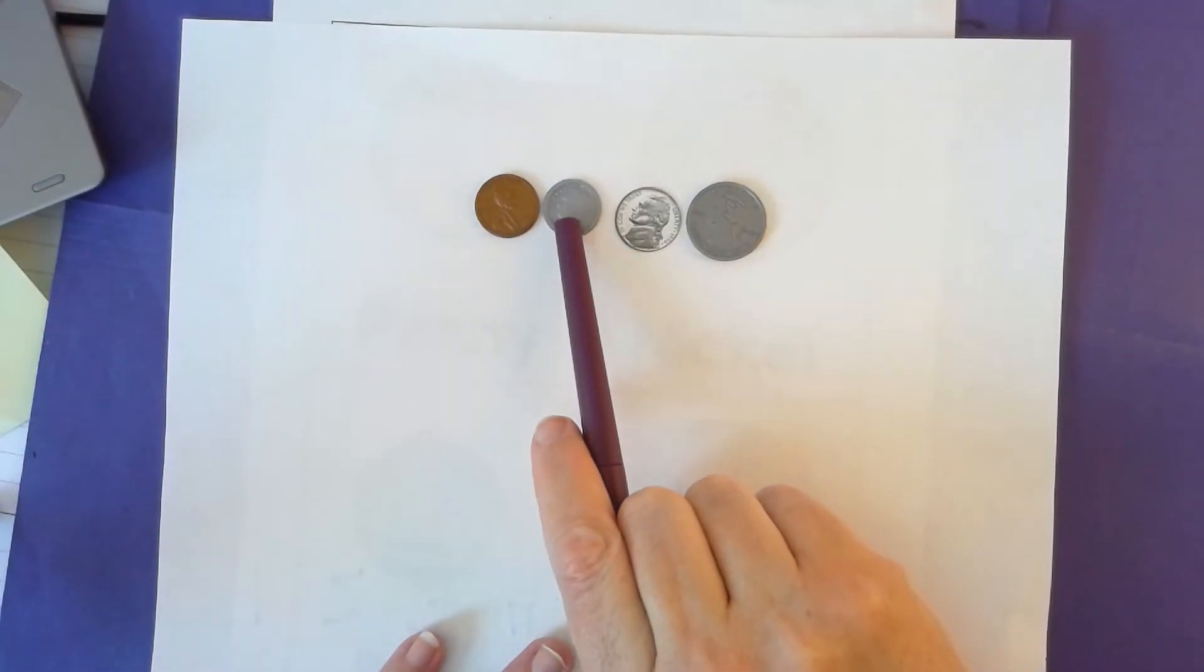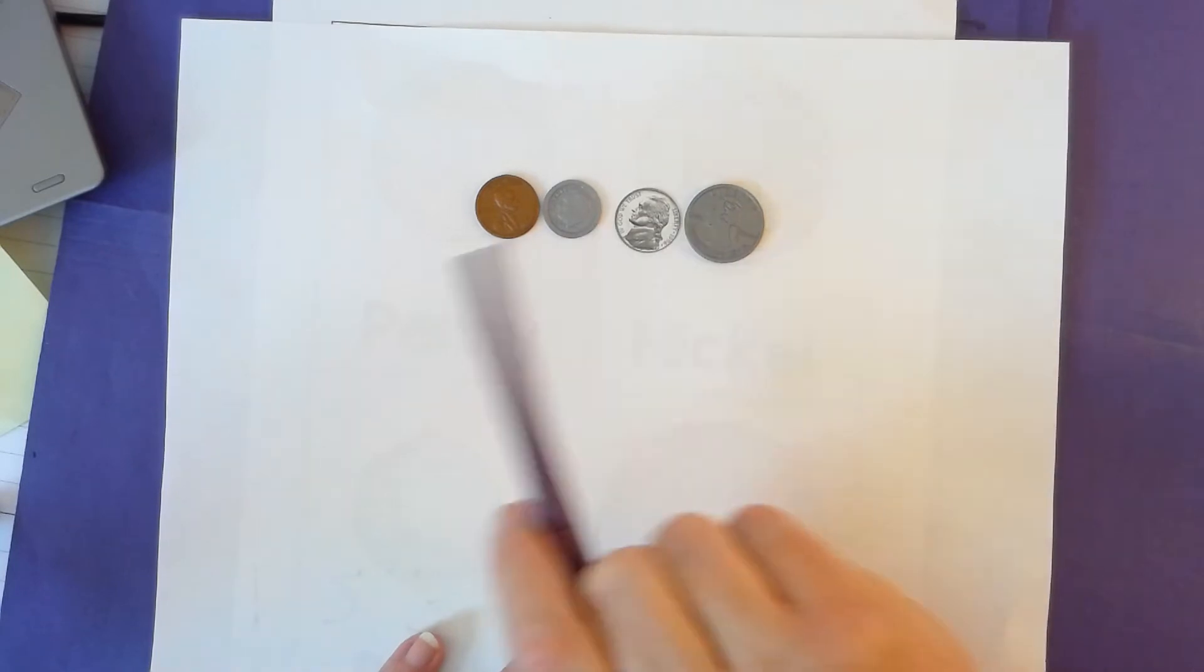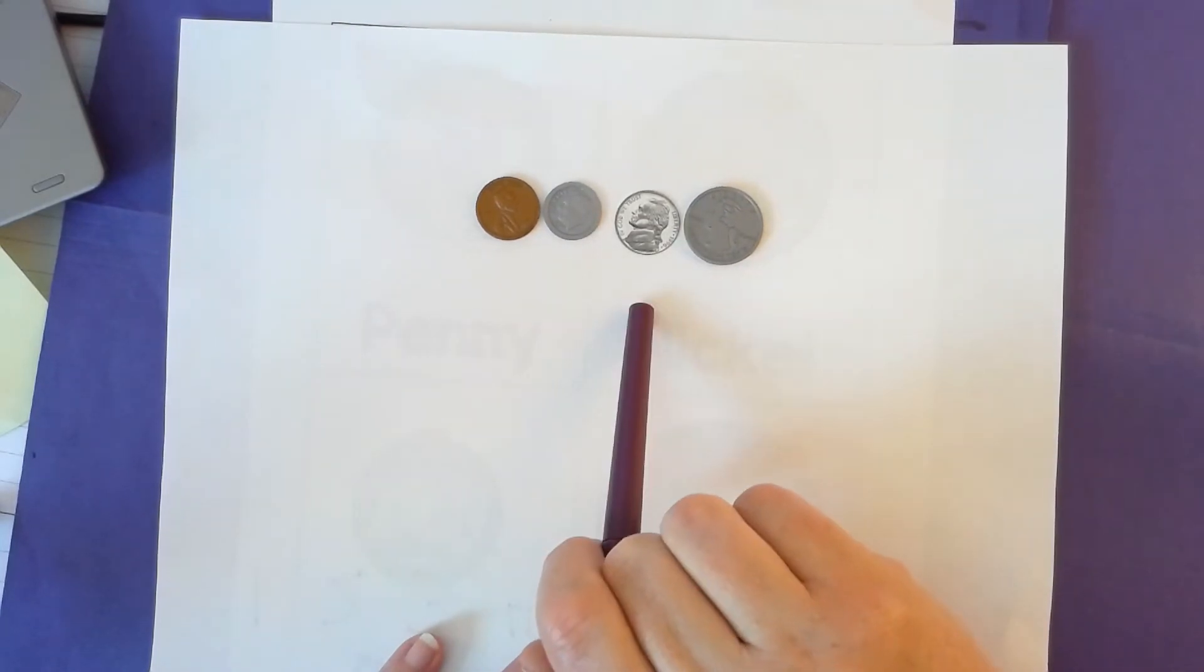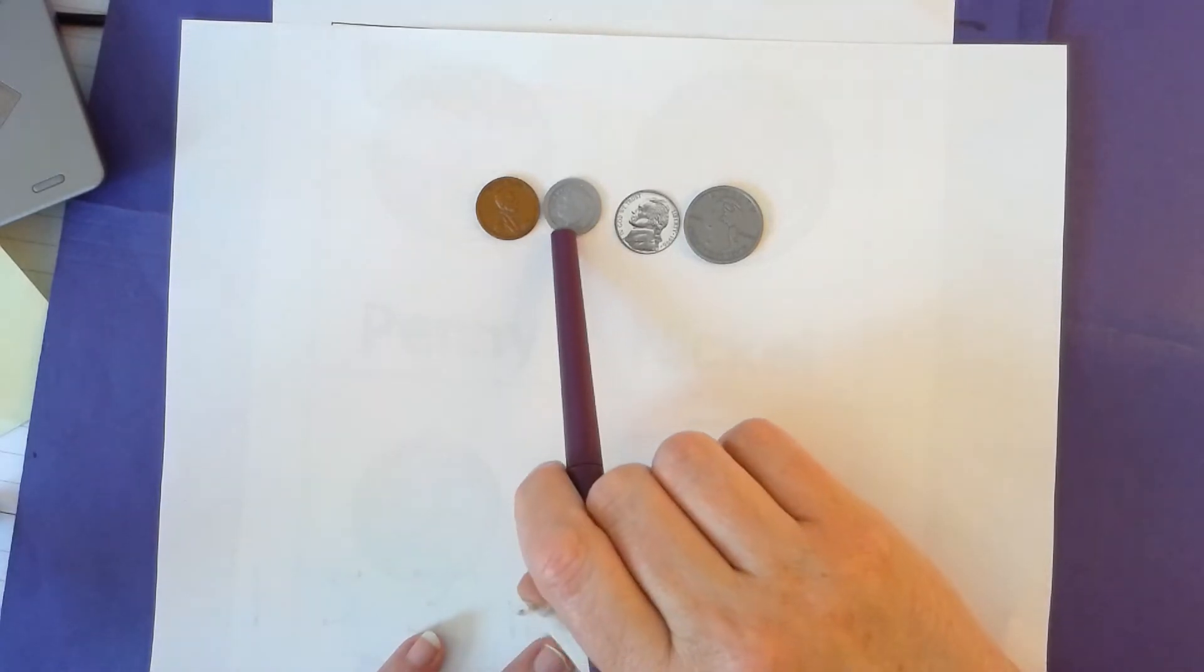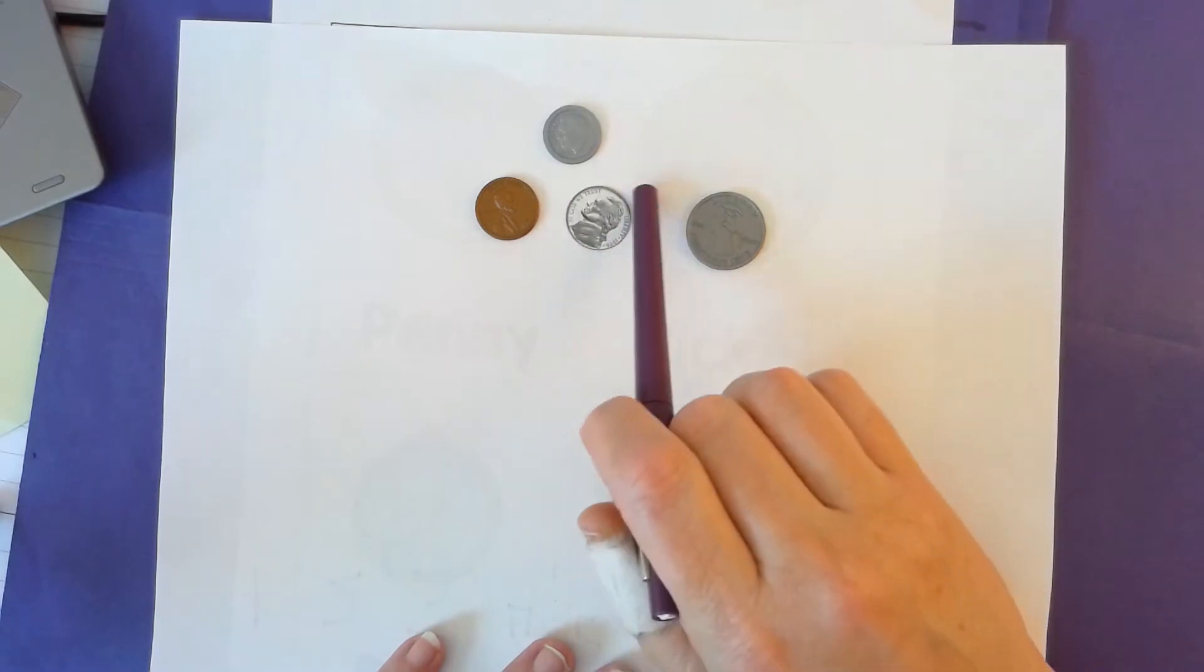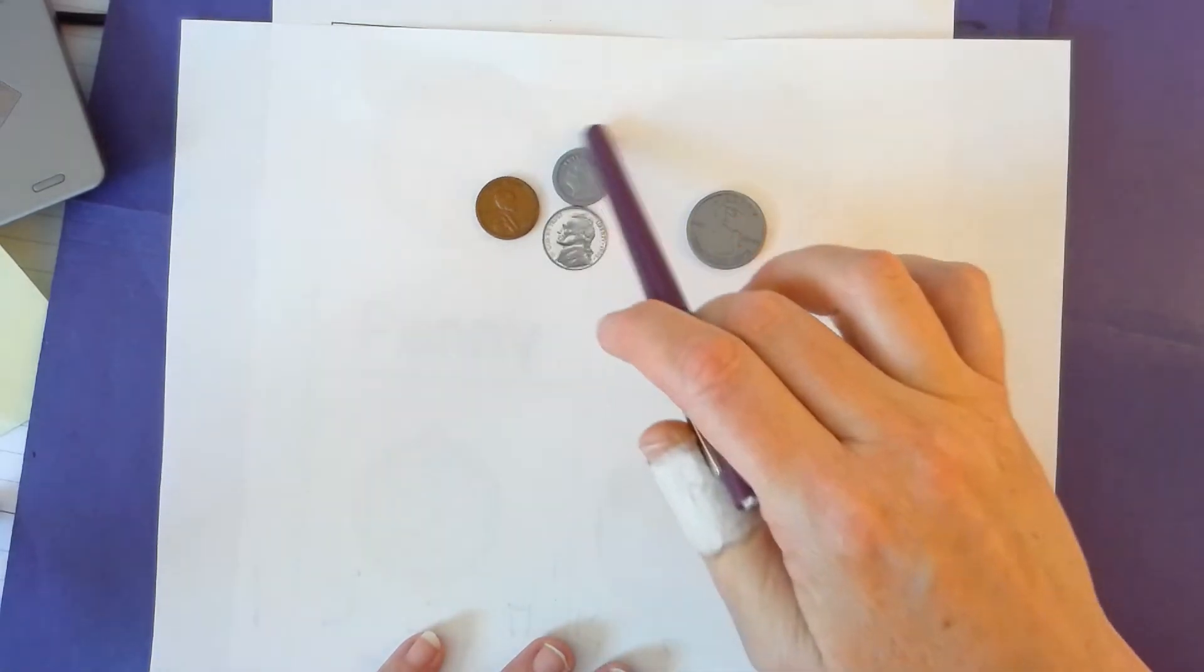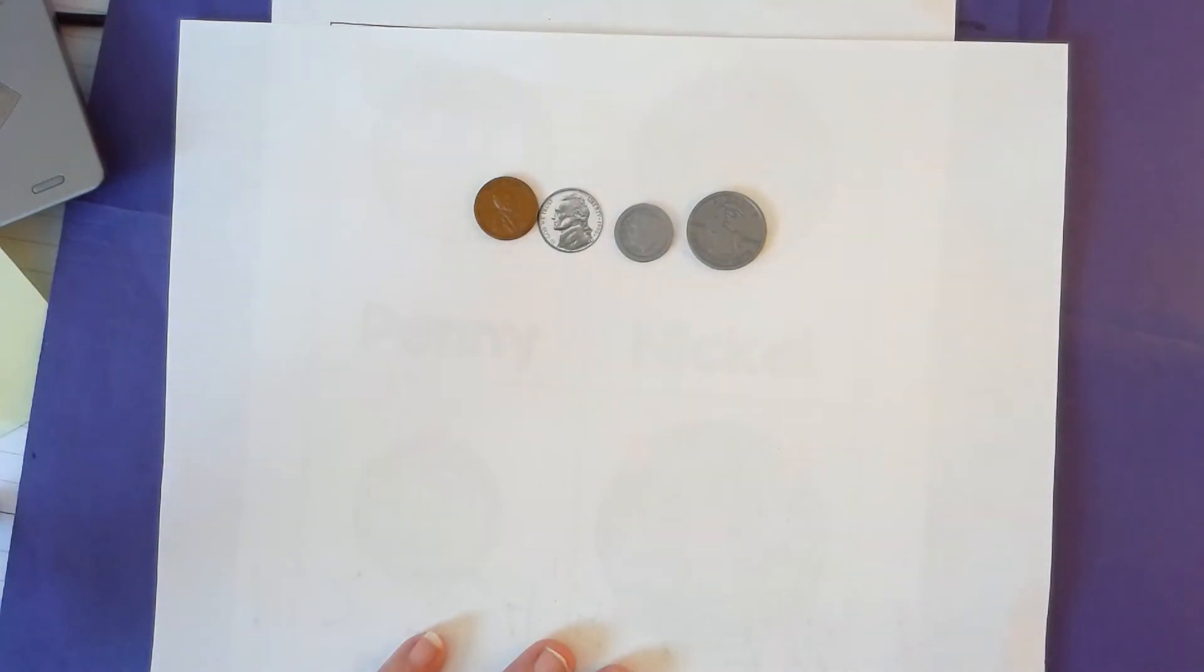So the dime is the smallest, and then there's a nickel and a quarter. And I'm just talking about size, not how much they're worth. Now this is where it gets confusing because actually the dime is worth 10 cents and the nickel is worth 5 cents. And so size in this way does not really matter of how much it's worth.